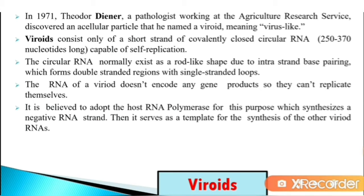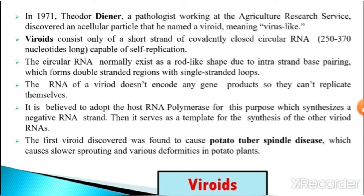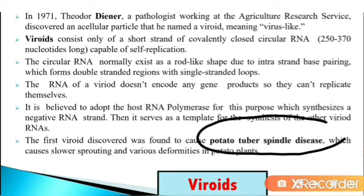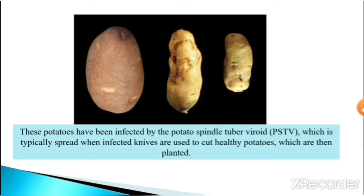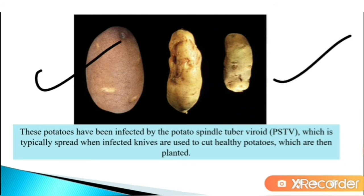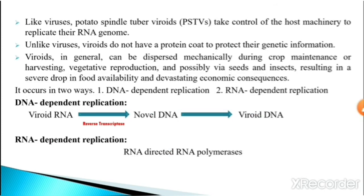The first viroid discovered was found to cause potato tuber spindle disease, which causes slow sprouting and various deformities in potato plants. These potatoes have been infected by the potato spindle tuber viroid, known as PSTV, which is typically spread when infected knives are used to cut healthy potatoes before planting.